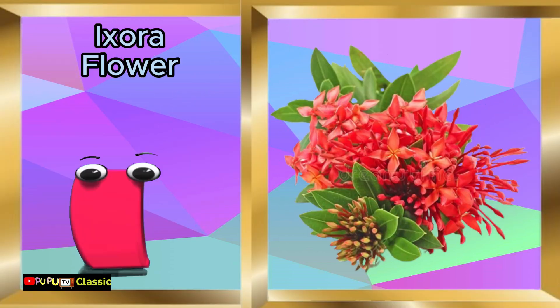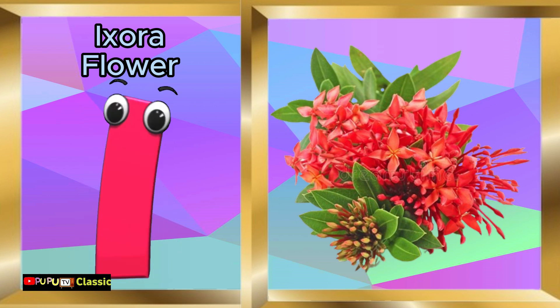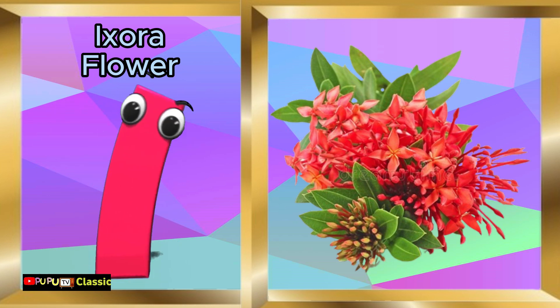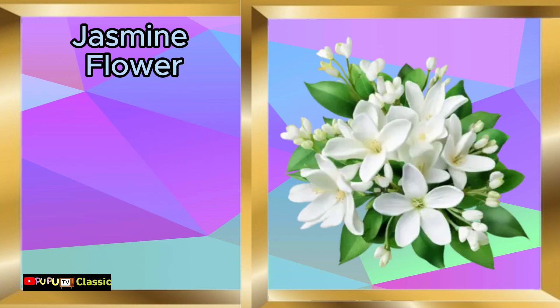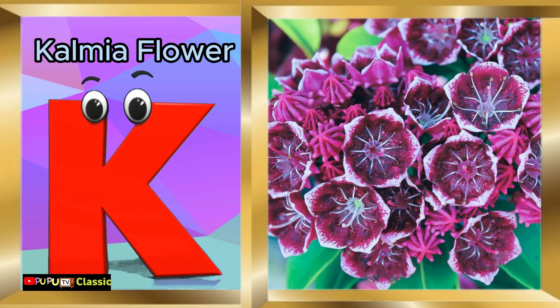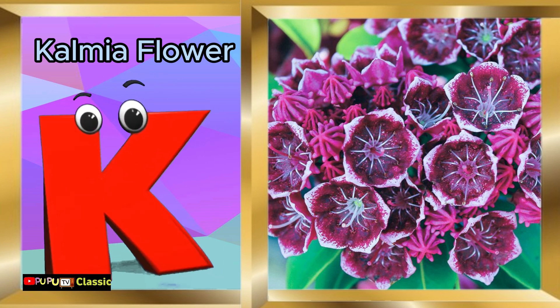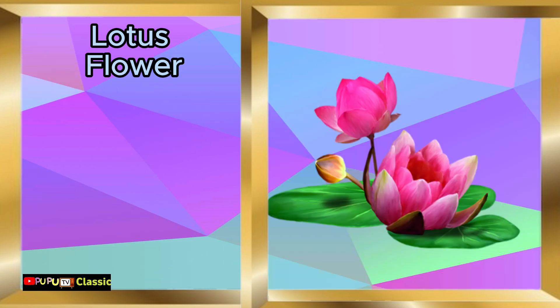I is for ixora flower, ixora flower. J is for jasmine flower, jasmine flower. K is for kalmia flower, kalmia flower.